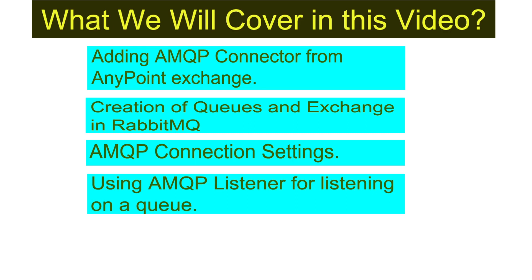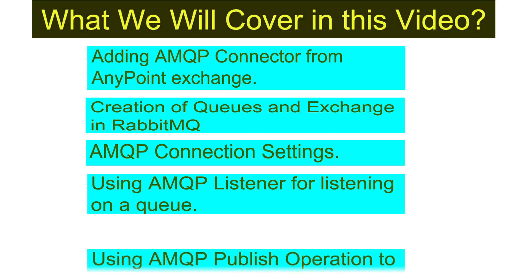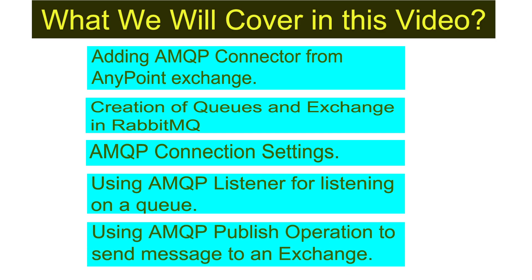I will use the AMQP listener to listen on a specific queue and receive messages, making them available in our flow. Last but not least, we'll see how to use the AMQP publish operation to send messages to an exchange, which has a binding to a particular queue, so once we publish the message to the exchange it will be made available in that queue as well.